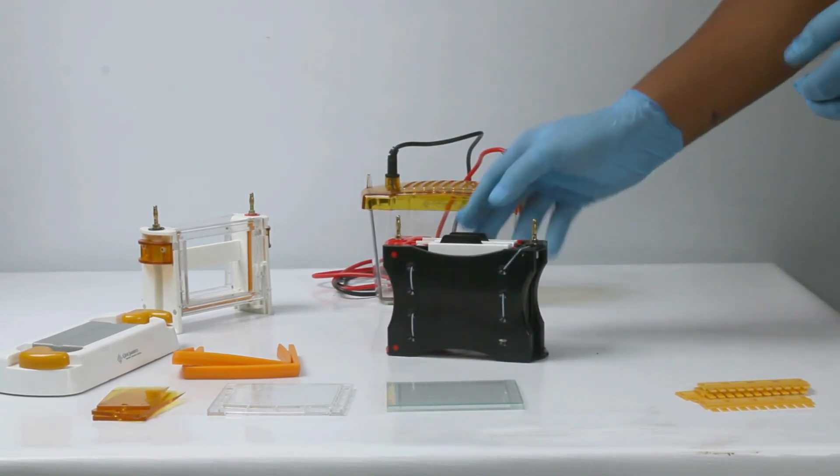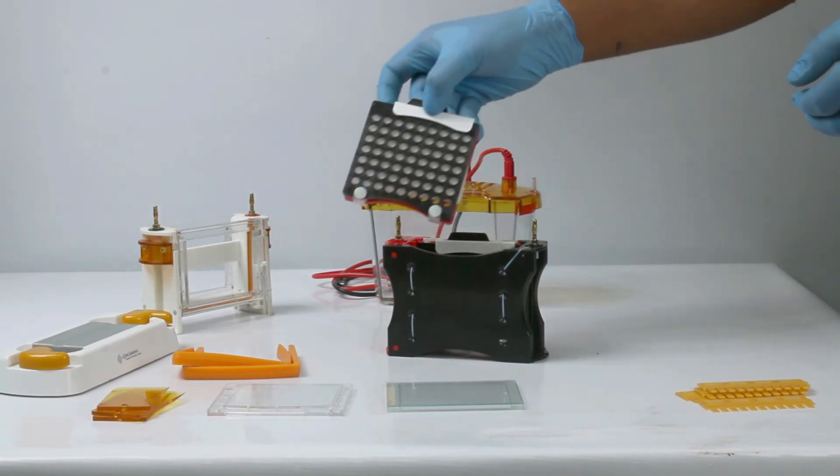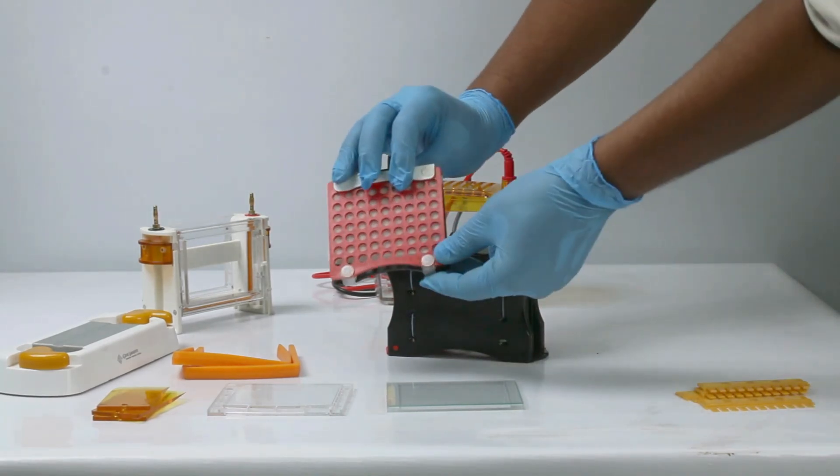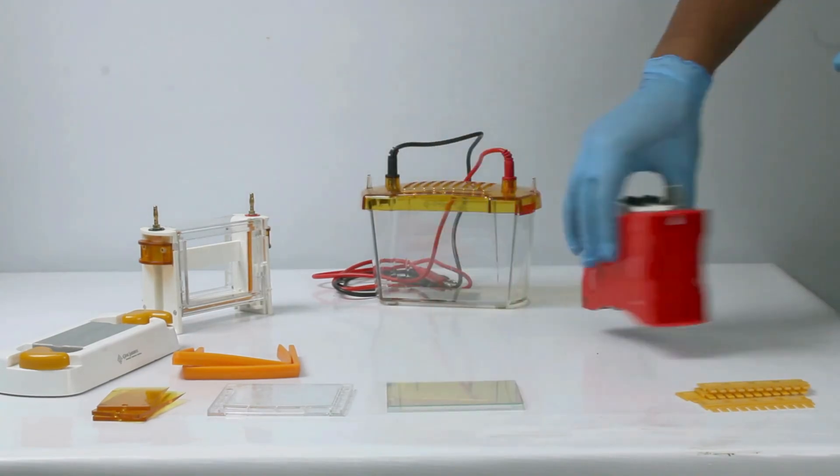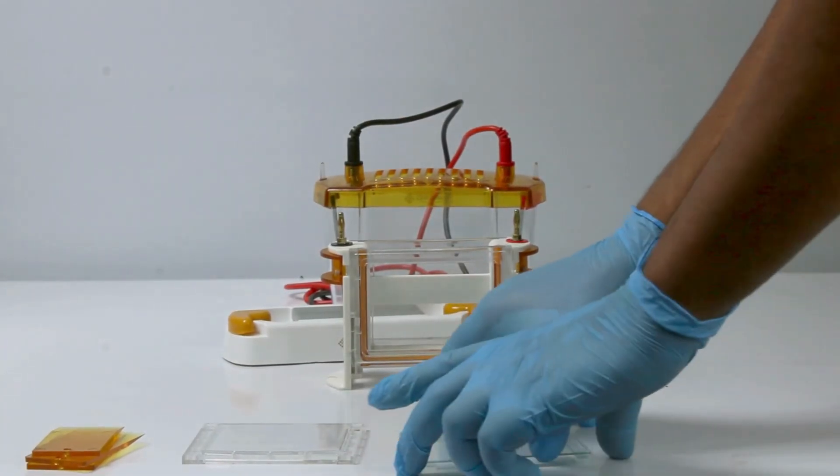This is our western block which is featured with color-coded marking. Black indicates negative side, red indicates positive side. Let us demonstrate the gel casting procedure.